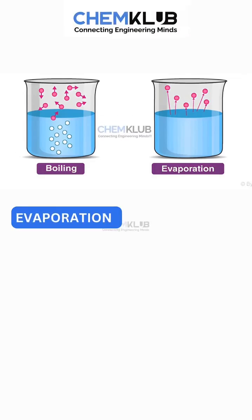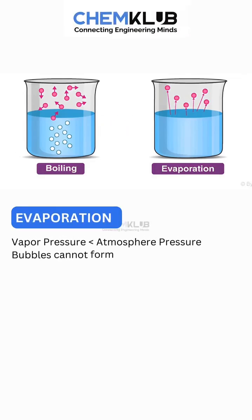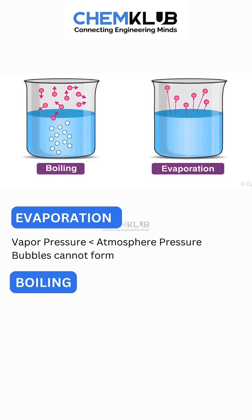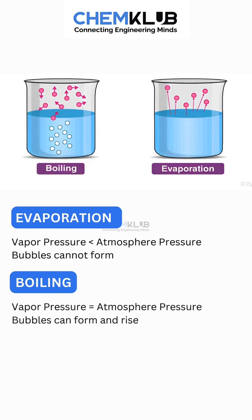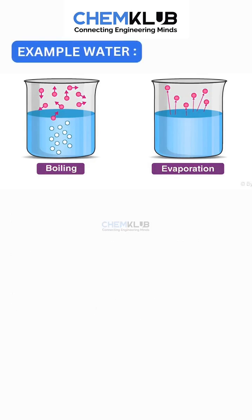In evaporation, the vapor pressure is less than the atmospheric pressure. In this case, bubbles cannot form. While in boiling, vapor pressure is equal to the atmospheric pressure, and here bubbles can form and rise.